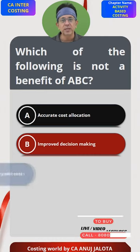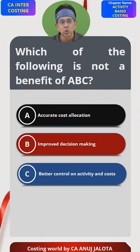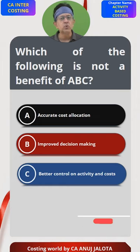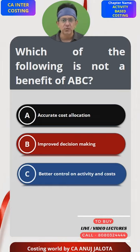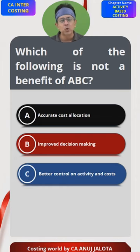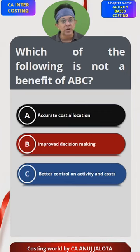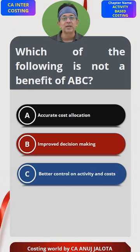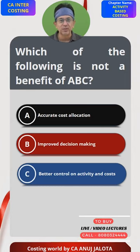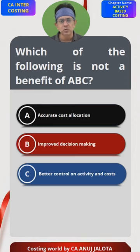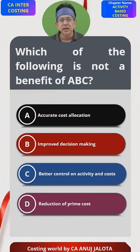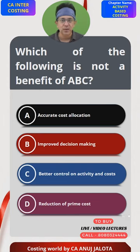Option C: better control on activity and cost — this should also be an advantage, because when you follow activity based costing you try to arrive at the cost driver rate. If it is high, you will start thinking about how to reduce it. This is actually called activity based management — using the data of activity based costing to improve your business. So option C is also correct.